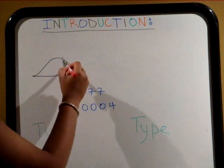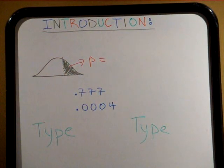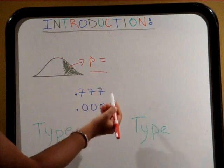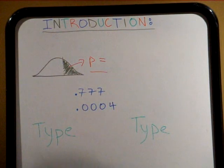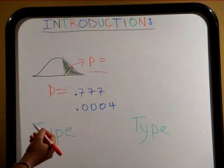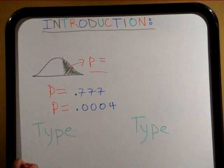A p-value is the probability that a certain event could happen by chance alone. P-values help us decide if we should fail to reject or reject the null hypothesis. When p is large, we accept the null. But when p is small, we reject the null.